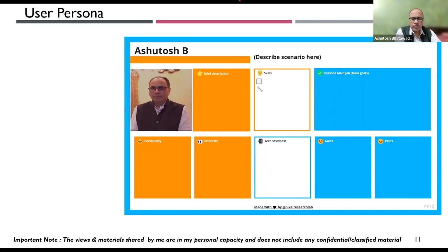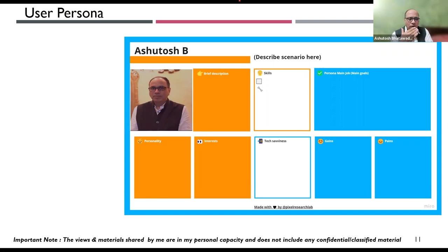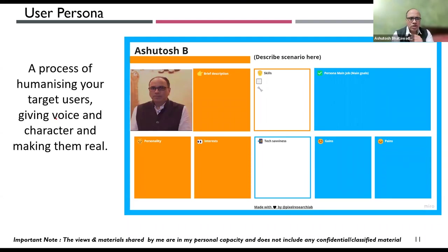A user persona has to be done properly with correct formatting, time, money, and investment in identifying user profiling. Many products fail because the right persona was not applied — the right elements were missing. A user persona is a process of humanizing your target users: what they like, dislike, their personality, their interests, and their dislikes.